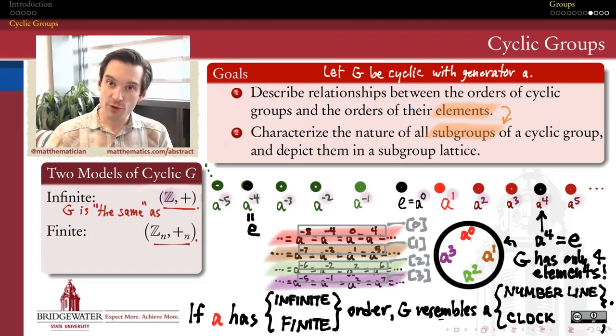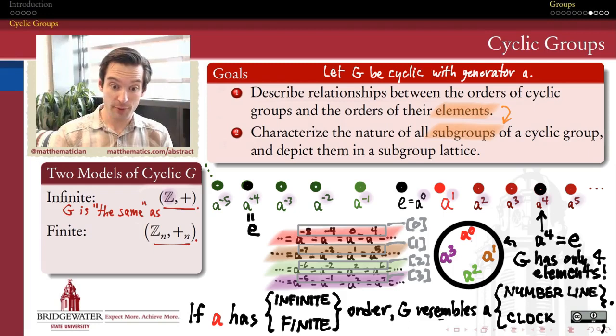Our last stop in our tour of the properties of cyclic groups is to close the loop on characterizing the nature of all subgroups of a cyclic group. Cyclic groups are really nice because we can always keep one of two models in our mental image of what cyclic groups look like.